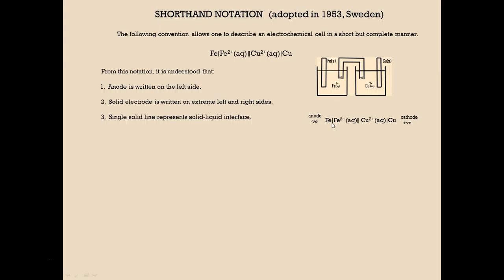Secondly, the solid electrode is written on the extreme left and the extreme right. Then third, the solid single line represents the solid-liquid interface, as we've just described. The double line represents the salt bridge, and electrons flow from the anode to the cathode in the external circuit.